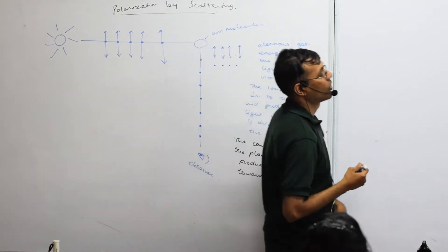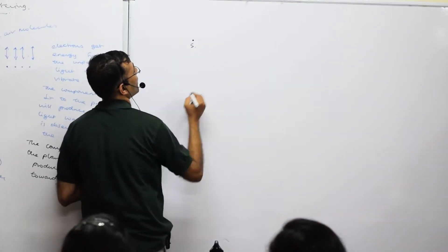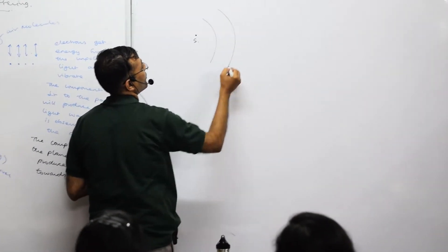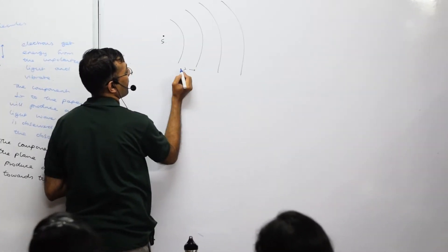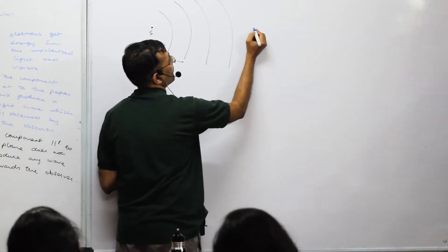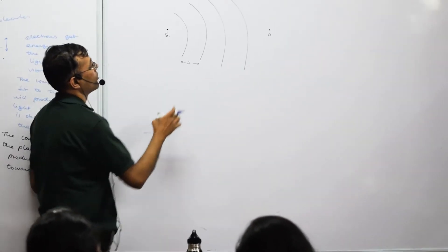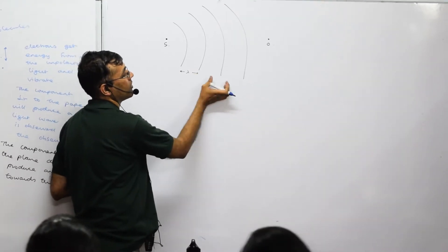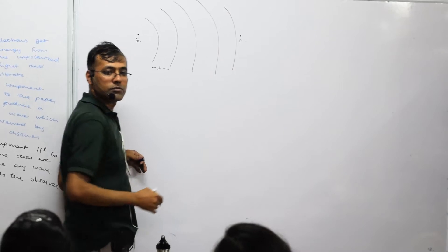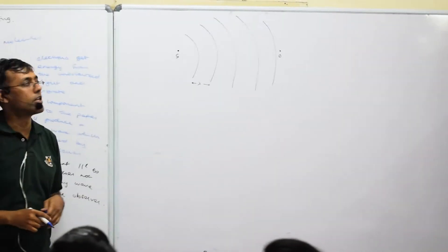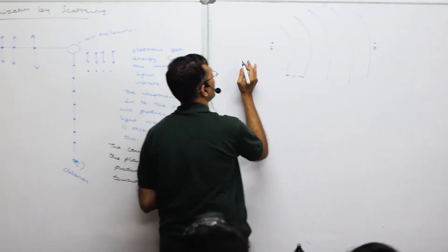If the source is not moving, there is no Doppler effect. If I have a source here producing some waves, that distance is your lambda. If I have an observer standing here, after every 5 centimeters they are going to hear a sound — that is what happens in the not-moving situation, where the source is stationary.